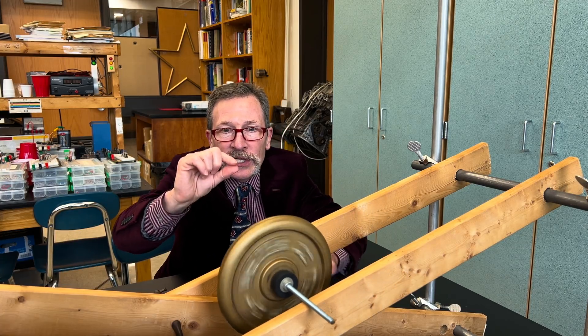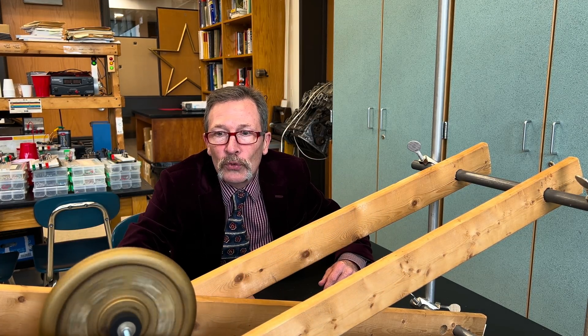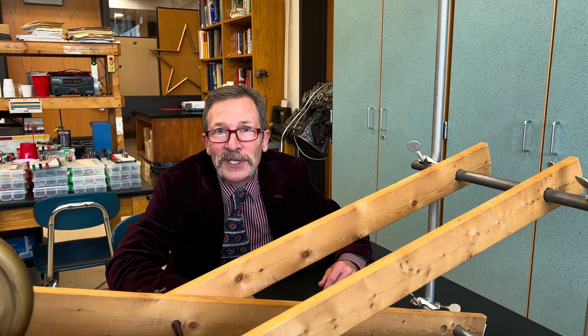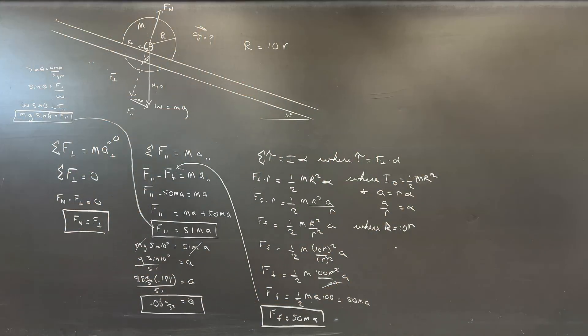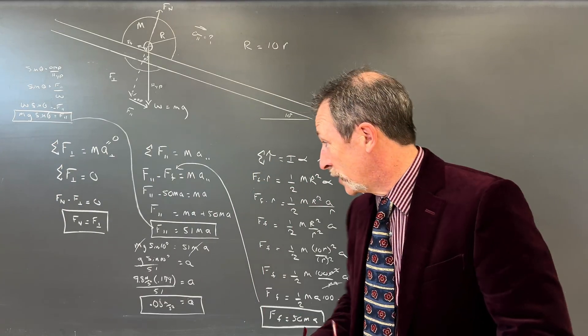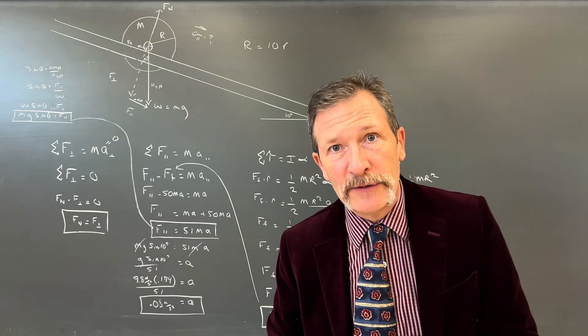And our A is going to end up being g times sine of 10 degrees all over 51. Let's find out what that A is. I'll put these in. 9.8 meters per second squared, sine of 10 degrees. Hit the sine button, and we get 0.174.